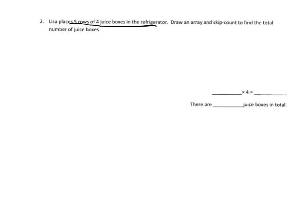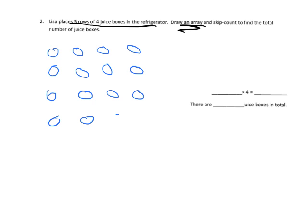First thing we're going to do is draw an array. Five rows of four juice boxes, so that means 1, 2, 3, 4 - there's one row. 1, 2, 3, 4. 1, 2, 3, 4. 1, 2, 3, 4. So there's our five rows of four juice boxes.